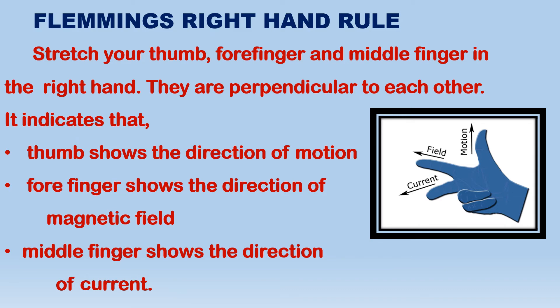Motion means movement. Movement is created in one direction; the magnetic field and current are in other directions. Stretch your thumb, forefinger and middle finger. The thumb shows the direction of motion, the forefinger shows the direction of magnetic field, and the middle finger shows the direction of the current carrying conductor.